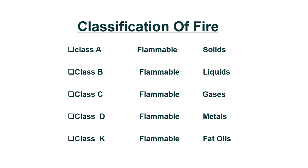Classification of fire. Usually there are four types of fire, and now a fifth type has also been added. Class A is solid fire, Class B is liquids, Class C is gases, Class D is metals, and Class K is kitchen flammable fire.